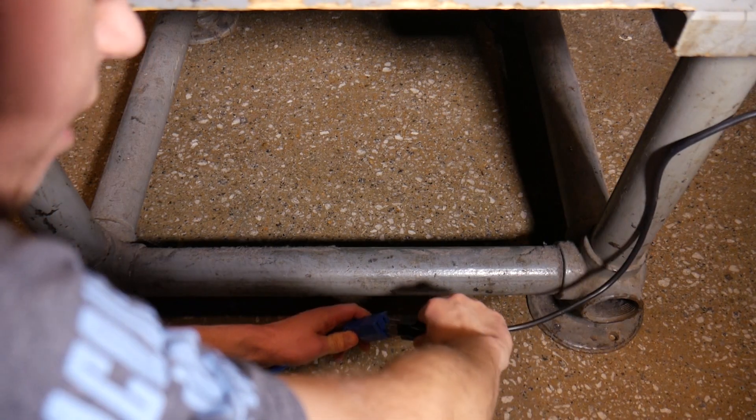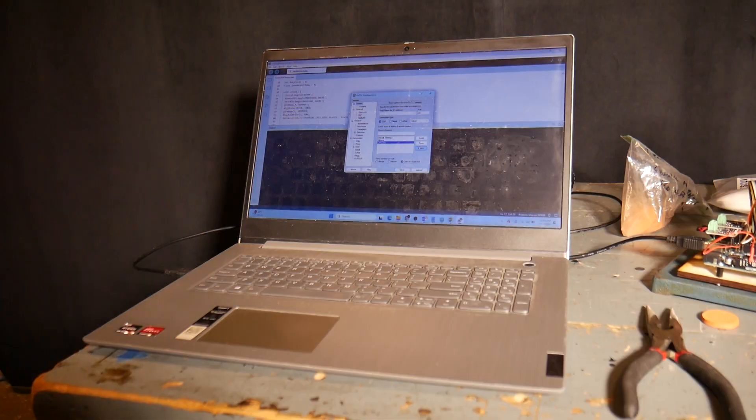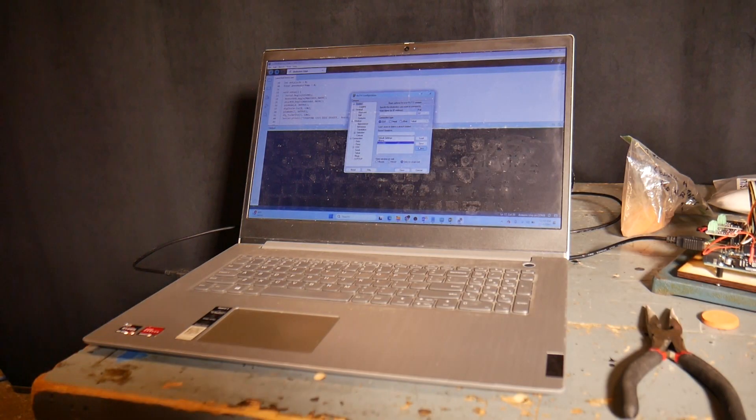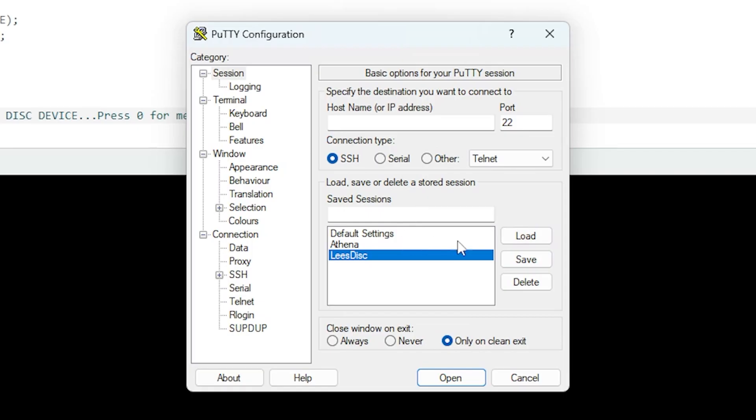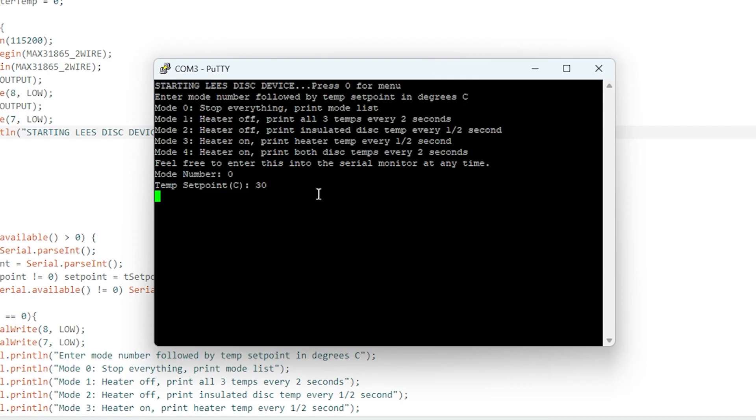I'm going to start by plugging in the Lee's disk device to the outlet as well as plugging the USB into my computer. I'm then going to open PuTTY on my computer and open the system parameters for the Lee's disk device. It's connected over com port 3 running at this speed over serial port. I have everything from this session being logged to a CSV file on my documents. This is the user interface for the Lee's disk device.